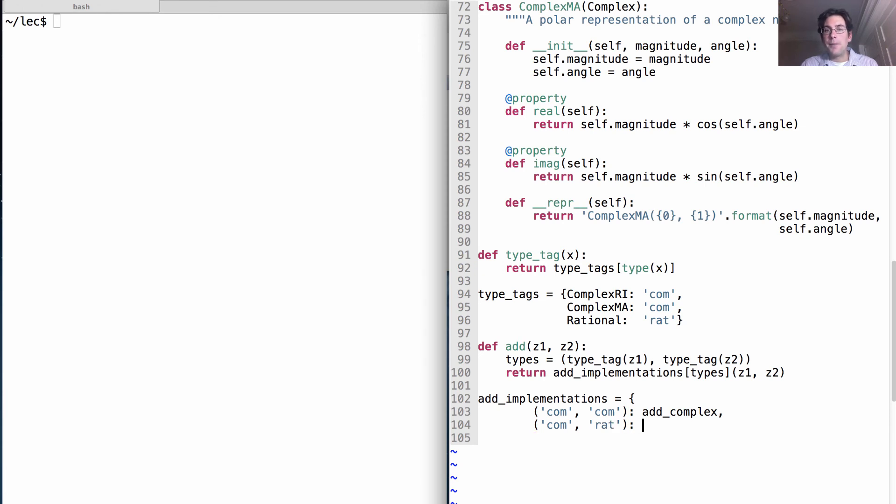How do we add together a complex number and a rational number? Well, we call the function that we defined before, add_complex_and_rational.